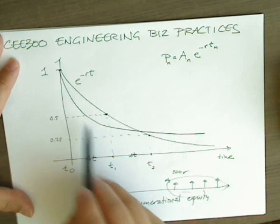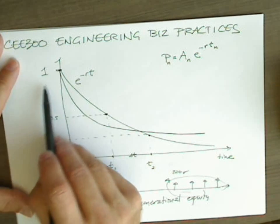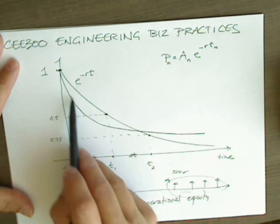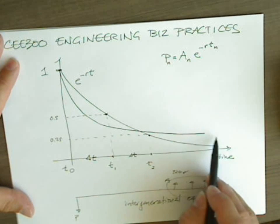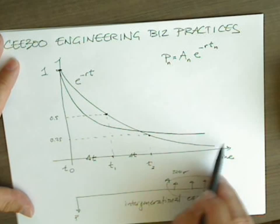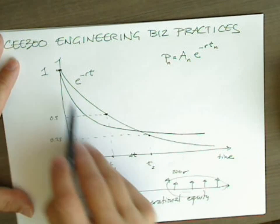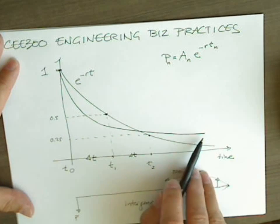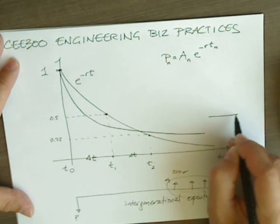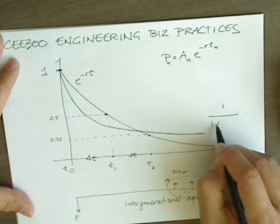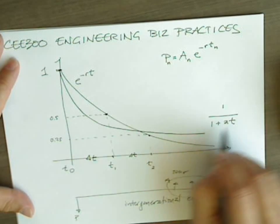Again, we're subject to intersecting the y-axis at one, and monotonically declining, and at time equal to infinity being zero, asymptotically approaching zero. So we could have a different form of the function that meets the exact same constraints. And this form is called the hyperbolic discount factor formula.